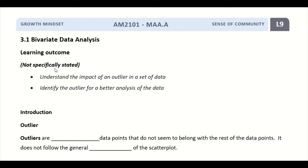When you look at the learning outcome here, it's not specifically stated because in your syllabus itself, it didn't state that you need to learn this. This is more general knowledge that students learn in Year 11 already. But it's very important because this concept will eventually come up in your past year papers. We are going to learn what is meant by outlier, understand its impact on a set of data, identify the outlier, and decide what to do so that we can carry out a better analysis.